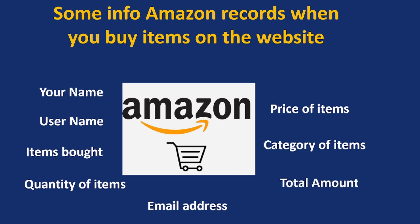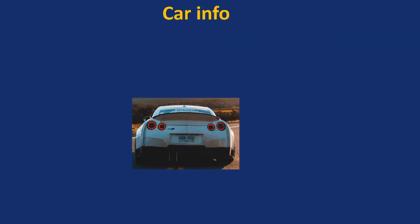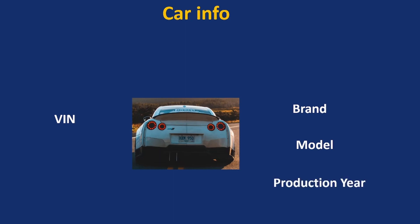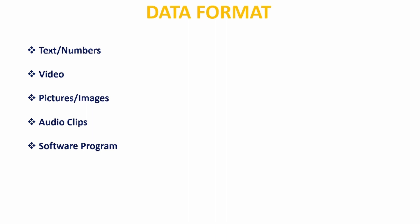From the price and quantity of items, they will generate the total amount. All this information captured on the Amazon website constitutes data. What about car information? We could have the VIN number — that's the vehicle identification number — the brand of the car, the model, the production year, the manufacturer, and the price of that car. Take note, all these are data, but all this data needs to be stored somewhere.